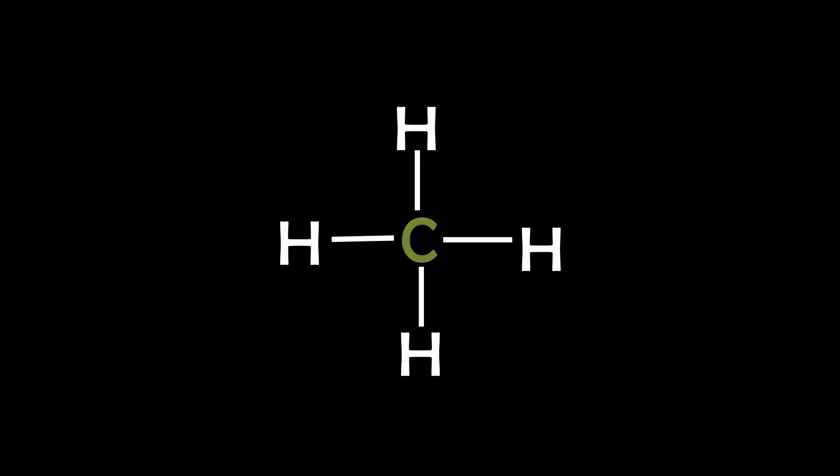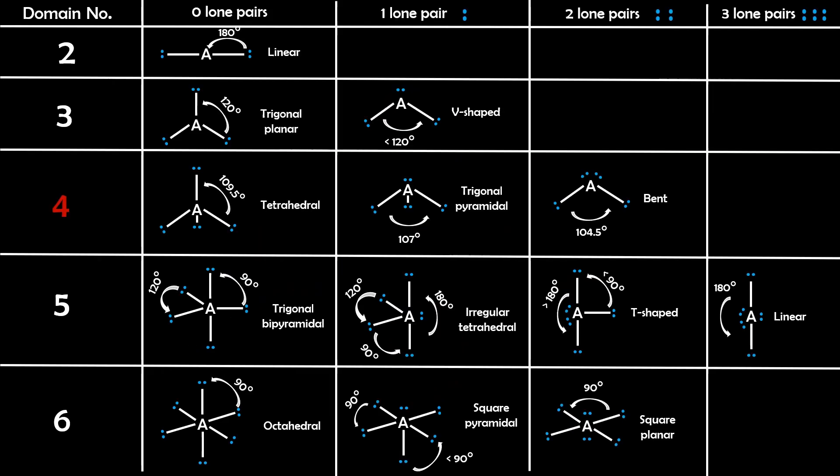So let's go through a few examples. Example 1: Methane. First, draw the Lewis structure. Carbon has four bonded atoms and no lone pairs. That gives us four electron domains, which corresponds to a tetrahedral geometry.